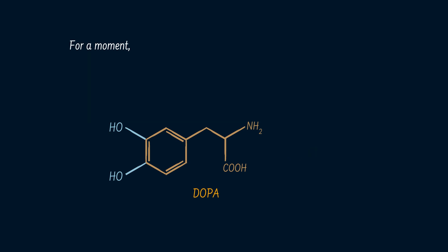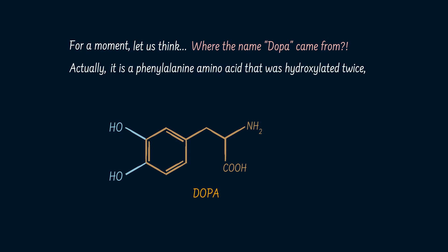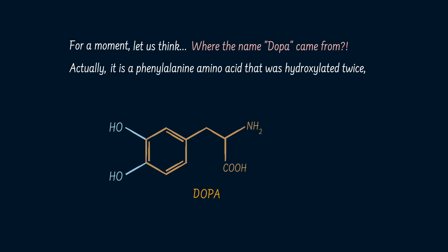For a moment, let us think about where the name 'dopa' came from. Actually, it is a phenylalanine amino acid that was hydroxylated twice — in other words, it is dihydroxyphenylalanine, which can be abbreviated to D-O-P-A: dopa.